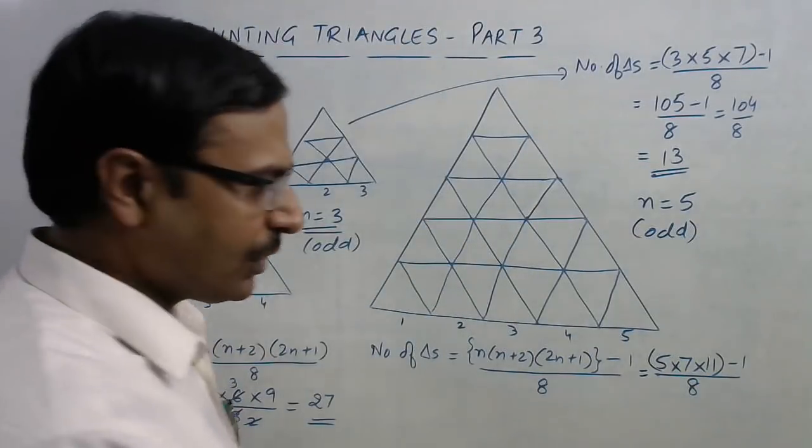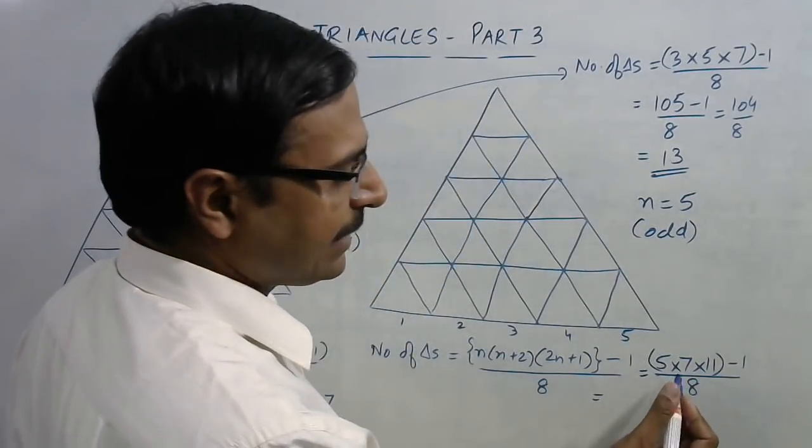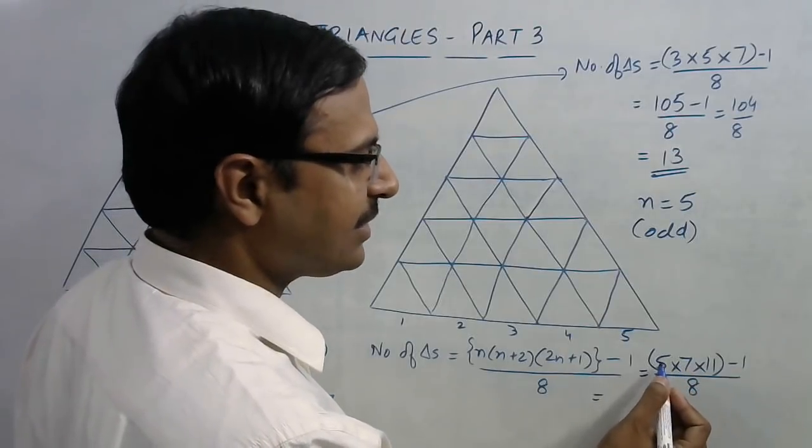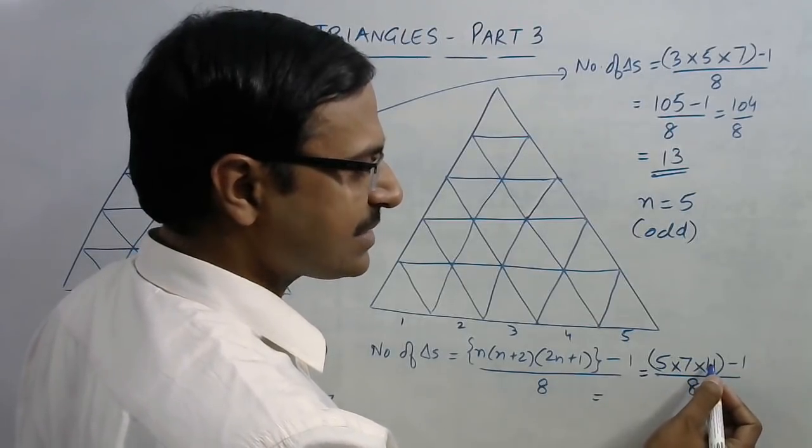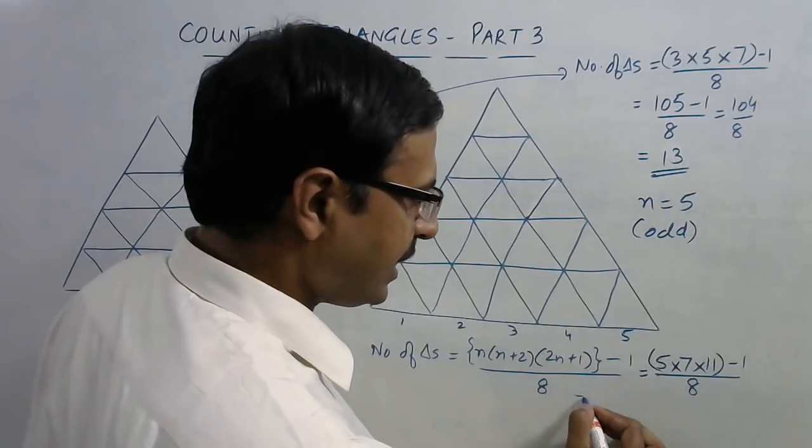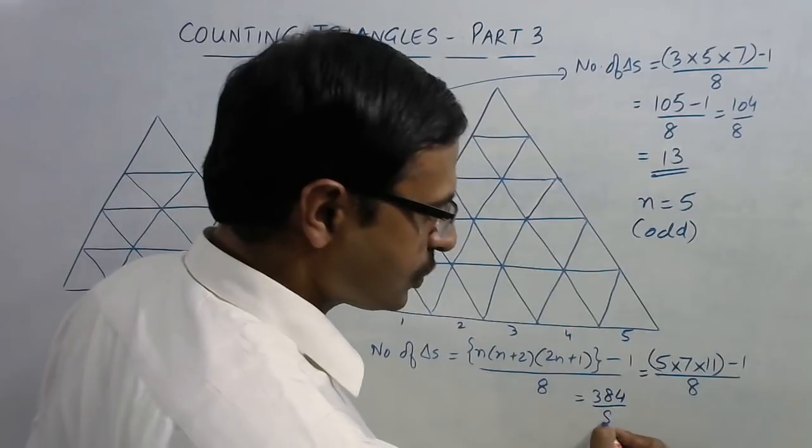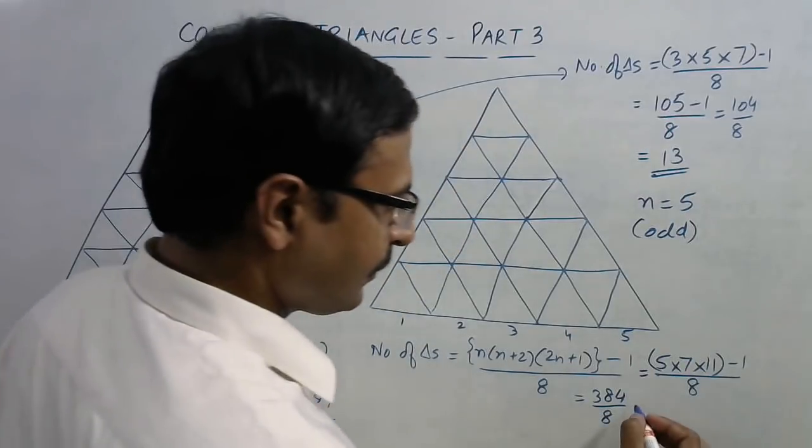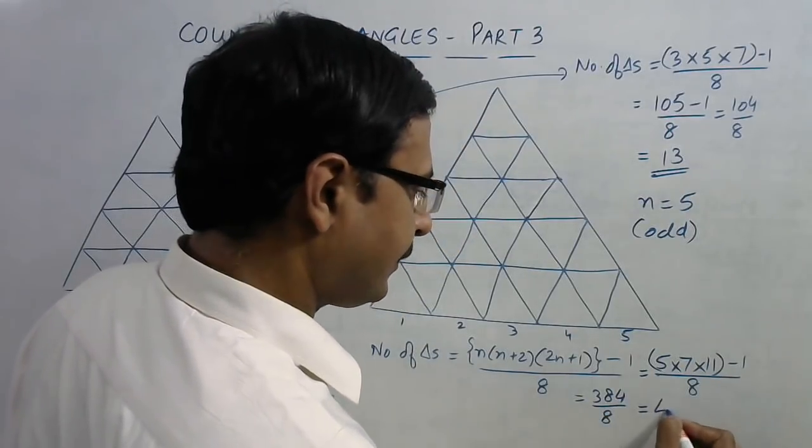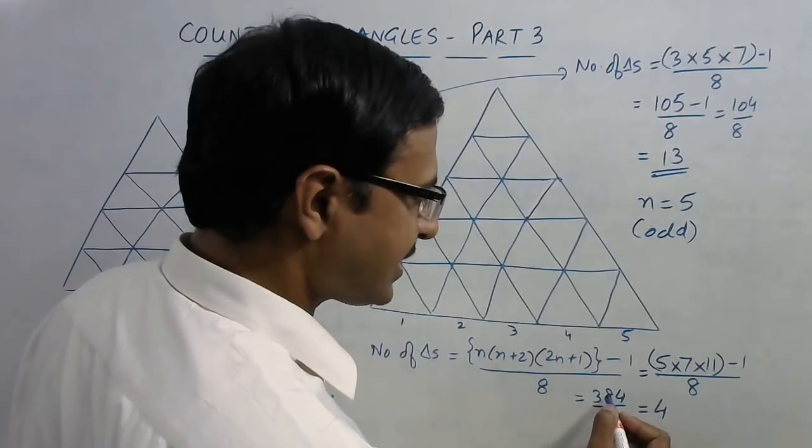So what will you get on multiplying these? This is seven, five of thirty-five, thirty-five into eleven is three fifty plus thirty-five equals three hundred and eighty-five. Minus one is three eighty-four, so you need to divide that by eight. So eight fours are thirty-two, so we have six sixty-four, so eight eight the sixty-four, so there are forty-eight triangles in this figure.